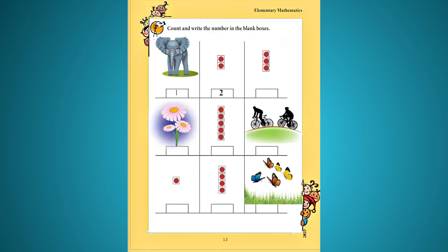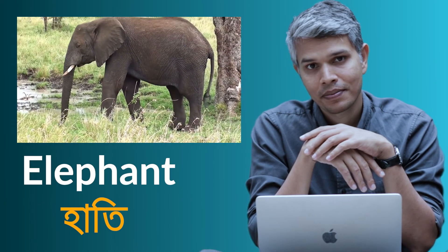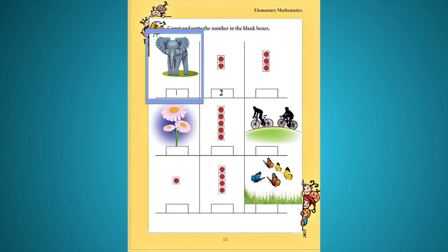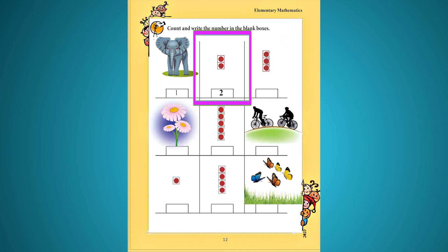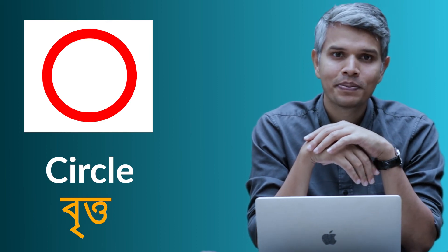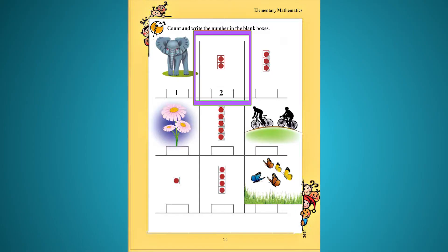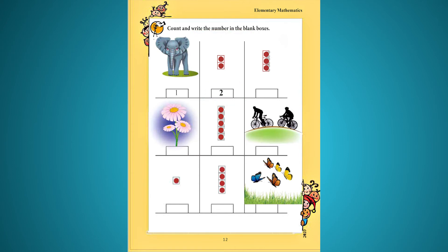এবং লিখতে হবে the right number — অর্থাৎ সঠিক সংখ্যাটি আমাদেরকে খালি যে ঘর আছে, শূন্যস্থানে বসাতে হবে। প্রথম ছবিটিতে আমরা দেখতে পাচ্ছি একটি হাতি — হাতিকে ইংরেজিতে বলি elephant। আমার সাথে শব্দটি আবার বলো — elephant। তাহলে রয়েছে একটি হাতি, তাই খালি ঘরে লিখবো one। পরের ছবিটিতে তোমরা দেখতে পাচ্ছো দুটি বৃত্ত বা two circles দেওয়া আছে।